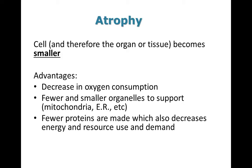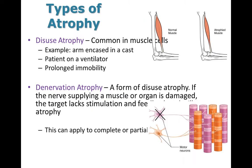Atrophy is when the cell, and as a result the tissue or the organ, becomes smaller. This usually happens when some type of cell damage occurs. This is actually advantageous to the organism because when the cells get smaller they decrease their oxygen consumption. They have fewer and smaller organelles — the little working organs within a cell — and they don't have to make as many proteins, so they're conserving their resources. There are several types of atrophy.